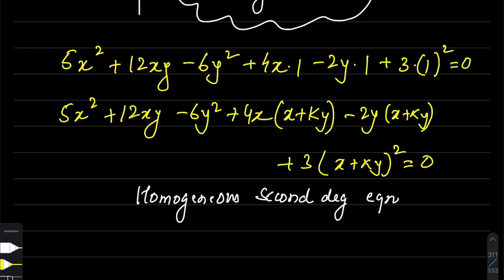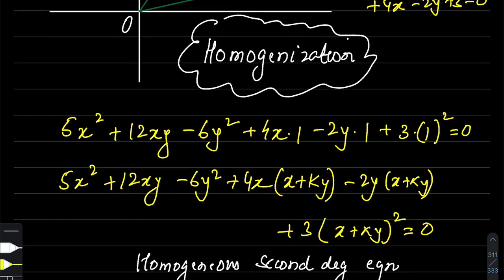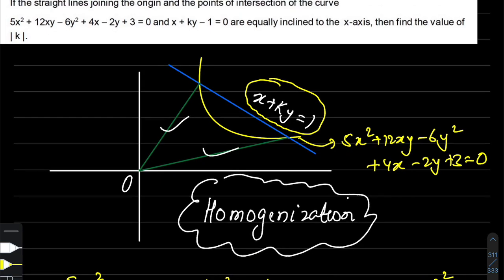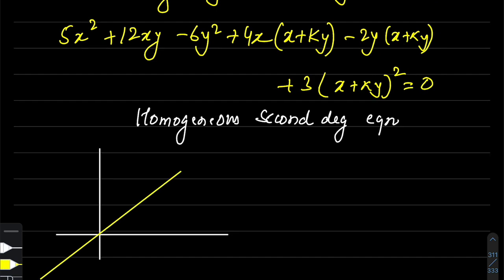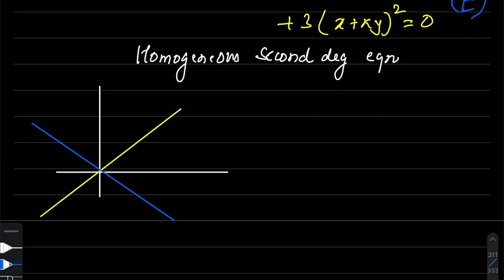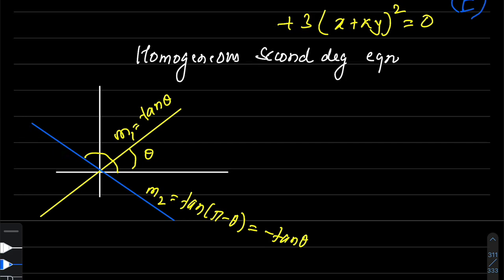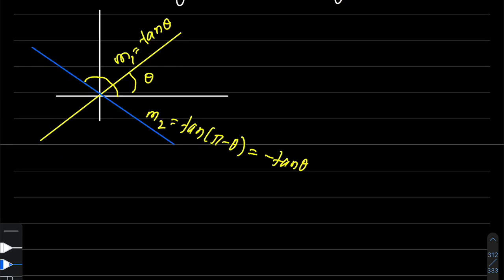The question states that this pair of straight lines is equally inclined to the x-axis. Equally inclined to the x-axis means the slopes of the two lines are negatives of each other. If one line makes angle θ, its slope is tan θ; the other makes angle π minus θ, so its slope is negative tan θ. Therefore, m₁ and m₂ are equal and opposite in sign.